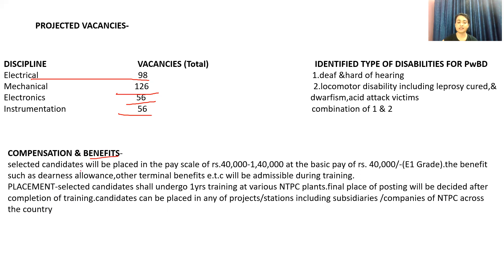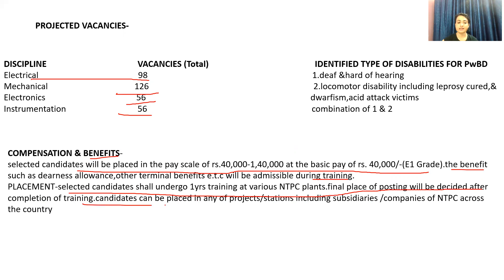Compensation benefits: selected candidates will be placed in the pay scale of rupees 40,000 to 1 lakh at the basic pay of rupees 40,000. Benefits such as dearness allowances and other terminal benefits will be admissible during training. Selected candidates shall undergo one year training at various NTPC plants. Final place of posting will be decided after completion of training. Candidates can be placed in any of the project stations including subsidiaries or companies of NTPC across the country.